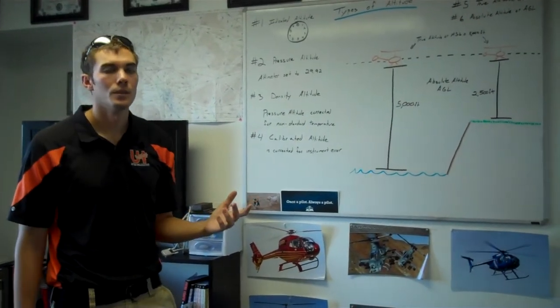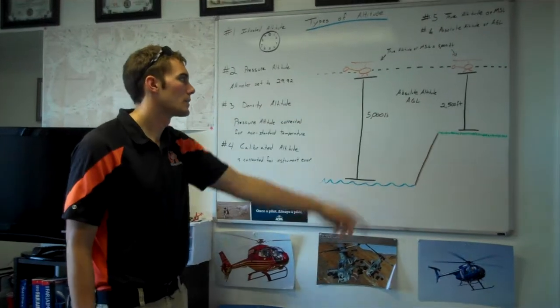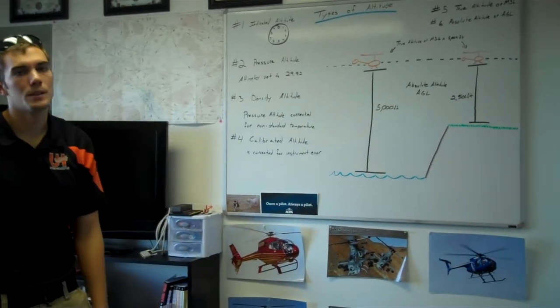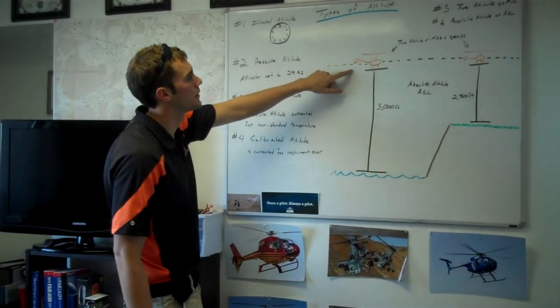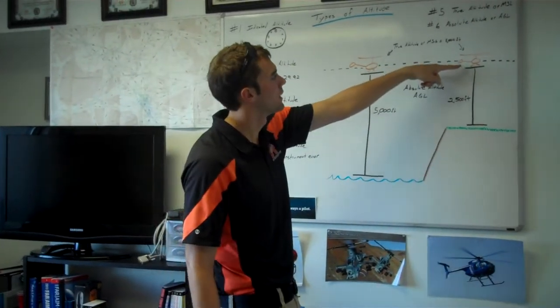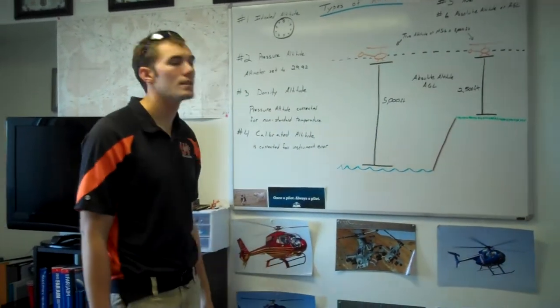The two most common that we refer to is true altitude and absolute. True altitude is MSL. So you can see this helicopter is flying at 5,000 feet. And it goes along and it's still flying at 5,000 feet MSL, mean sea level.